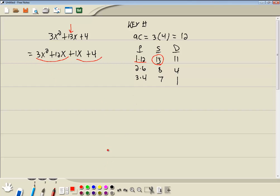Then we want to factor by grouping. Group the first two terms together, group the last two terms together. The GCF of the first two terms is 3x, and that gives us (x + 4).